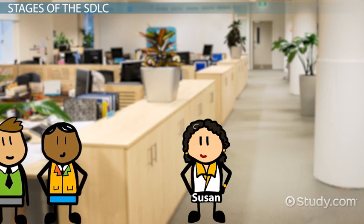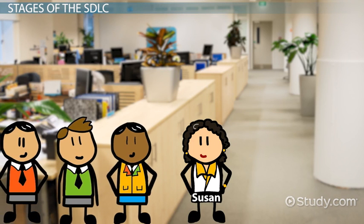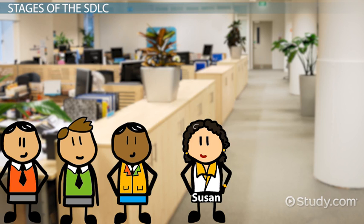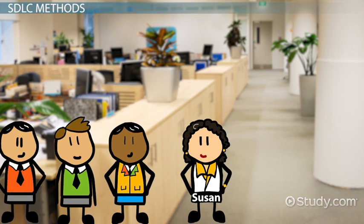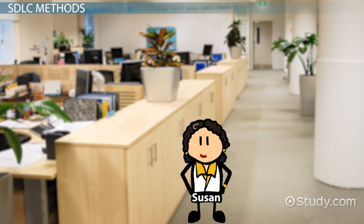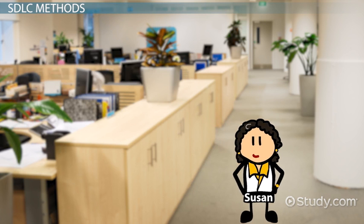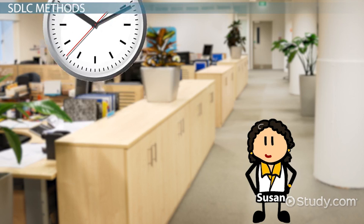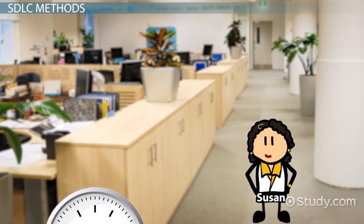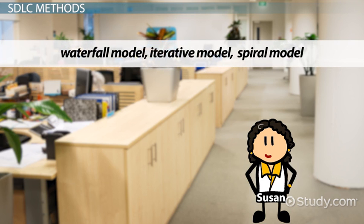Susan begins her project with planning and gathering the requirements. While her team is gathering customer requirements for the software, Susan decides to research various methods of the SDLC. There are several SDLC process models a project manager can follow to get through each phase. The process models are different ways to move through each phase, and they depend on the customer's requirements and the length of time the project team has to complete the project. Some of the SDLC models include the Waterfall model, Iterative model, and Spiral model.